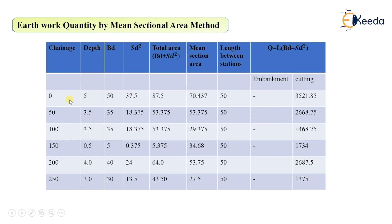The total area at each section is BD + SD². So: 50 + 37.5 = 87.5; 35 + 18.375 = 53.375; and so on for each chainage. This gives us the total cross-sectional area combining the rectangular and triangular components.